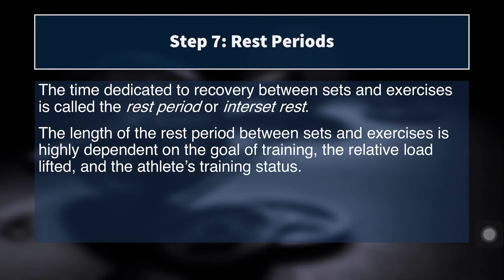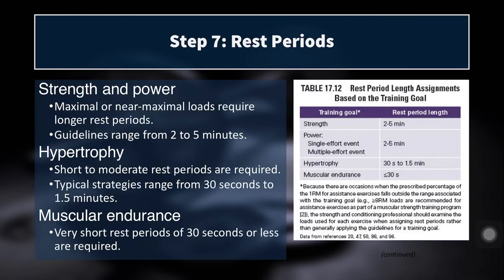Step seven for programming is rest periods — the time dedicated to recovery between sets and exercises. The length of the rest period is highly dependent on the goal of training, the relative load, and the athlete's training status. When training for strength and power using maximal or near-maximal loads, you need longer rest periods. The guidelines range from two to five minutes. For a heavy set of five on the back squat, you'll want three to five minutes of recovery. It depends on how long the set lasts, how near to failure it is, how much muscle mass is recruited, and how hard you're straining.